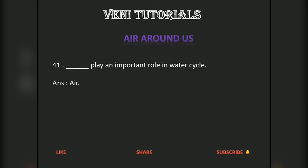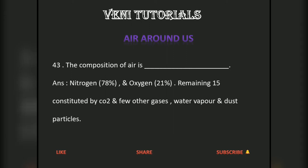Air plays an important role in the water cycle. Air in motion is called wind. The composition of air is nitrogen 78 percent and oxygen 21 percent, with the remaining one percent constituted by CO2 and a few other gases, water vapor, and dust particles.